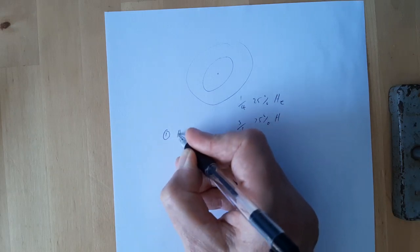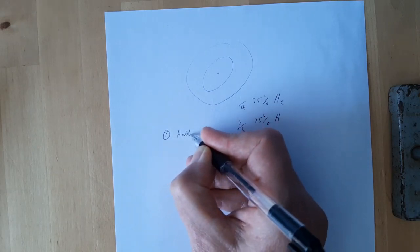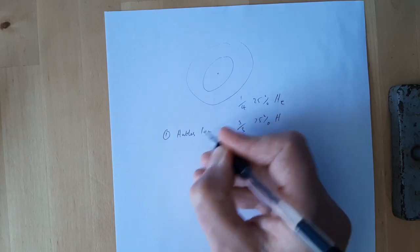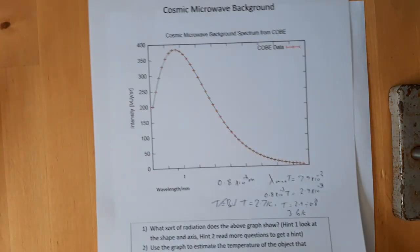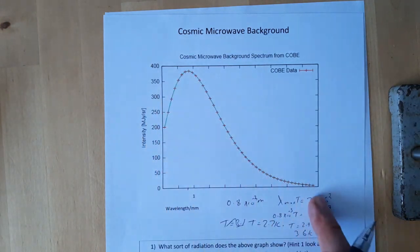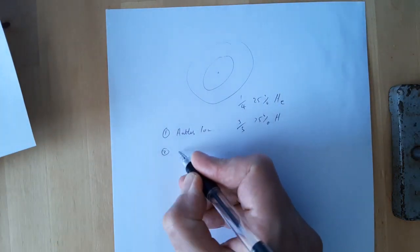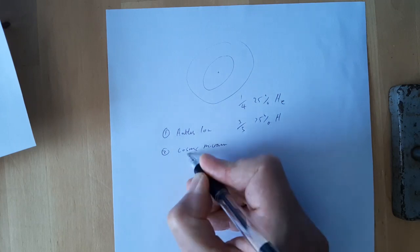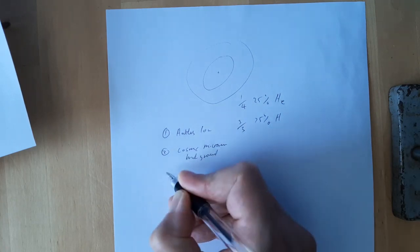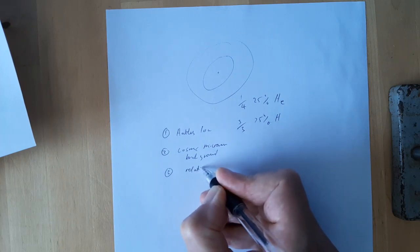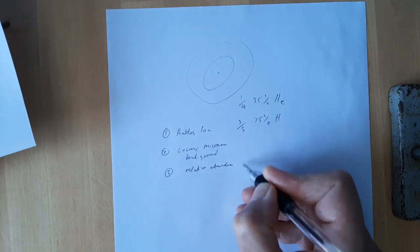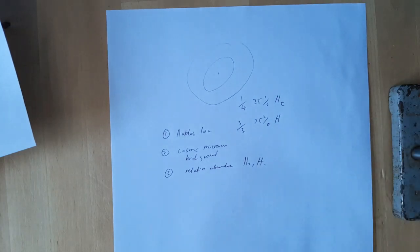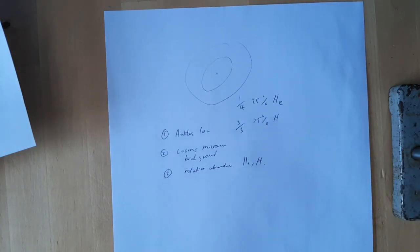So there are three pieces of evidence for the Big Bang. We've got Hubble's law indicating universal expansion. We've got black body radiation, and the expected black body radiation curve of the Big Bang exactly fits with the observed, so we've got cosmic microwave background. And then finally we've got the relative abundance of helium and hydrogen, and the helium being produced in a period of fusion before the universe cooled to the point where that wasn't possible. I hope you found that useful. Thank you very much.